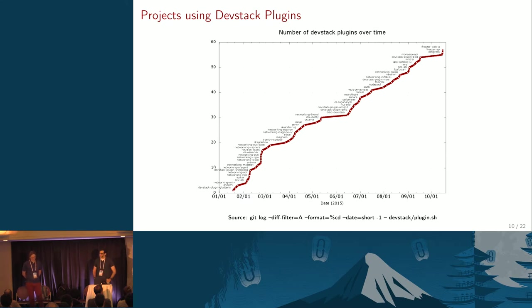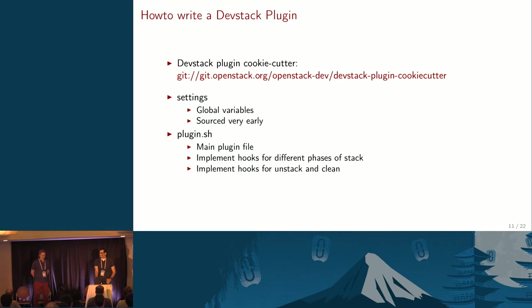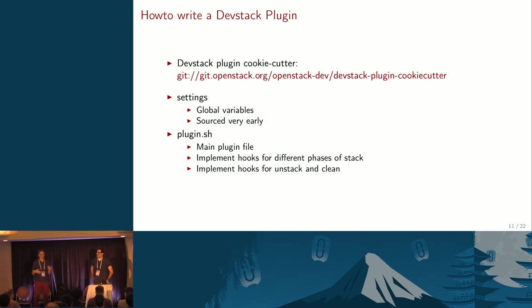We have 57 different plug-ins right now, which is quite impressive growth. If you want to write your own plug-in, there is a cookie cutter project you can use to set up your basic template and files. You don't have to use it, but I think it's quite useful. I would recommend it — it makes it easier also for people looking at the code, because they find things in the place they expect.